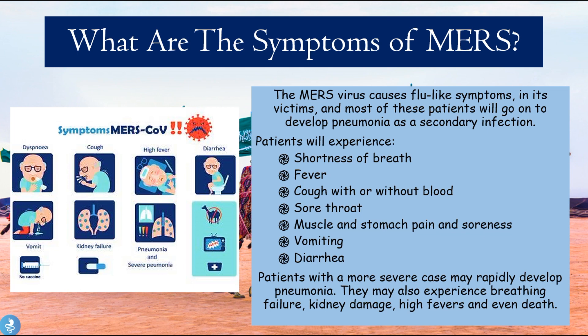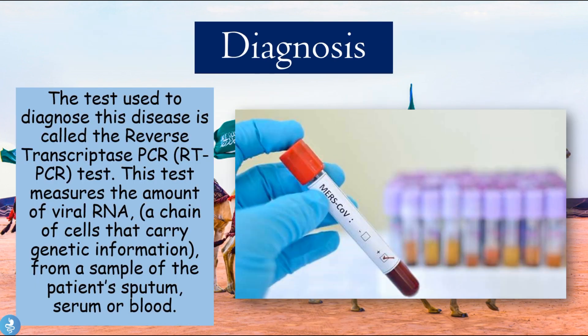Patients with a more severe case may rapidly develop pneumonia and may also experience breathing failure, kidney damage, high fevers, and even death. The majority of patients suffer a respiratory tract infection which could later develop into full-blown pneumonia. Once pneumonia develops it's much harder to treat. Later on, these patients may also experience kidney damage and even death, as the virus begins to multiply rapidly and leads to multiple organ failure.